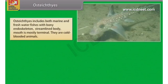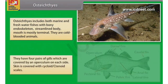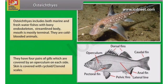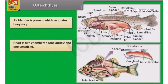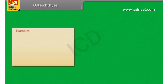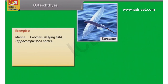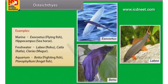Osteichthyes includes both marine and freshwater fishes with bony endoskeleton and streamlined body. Mouth is mostly terminal. They are cold-blooded animals. They have four pairs of gills, which are covered by an operculum on each side. Skin is covered with cycloid or ctenoid scales. Air bladder is present, which regulates buoyancy. Heart is two-chambered: one auricle and one ventricle. Fertilization is usually external. Sexes are separate. They are mostly oviparous and development is direct. Examples: Marine - Exocoetus (Flying Fish), Hippocampus (Sea Horse); Freshwater - Labeo (Rohu), Catla; Clarias (Magur); Aquarium - Betta (Fighting Fish), Pterophyllum (Angel Fish).